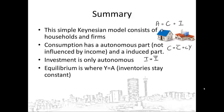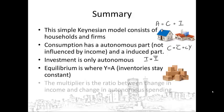The equilibrium in the Keynesian model is always where total production is equal to aggregate spending, because here inventories will be constant. Firms will produce the same amount of stuff as what households spend.